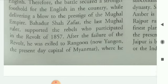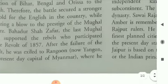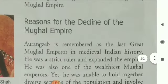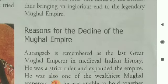Bahadur Shah Zafar, the last Mughal ruler, supported the rebels who participated in the revolt of 1857. After the failure of the revolt, he was exiled to Rangoon, now known as Naypyidaw, the present-day capital of Myanmar, where he died in 1862. His sons were killed by the British, thus bringing an inglorious end to the legendary Mughal Empire.